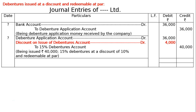To discount on issue of debentures account 4,000 — that is 40,000 into 10 percent — and to 15 percent debenture account 40,000. Being debenture of rupees 40,000 allotted at 15 percent debentures at a discount of 10 percent redeemable at par.